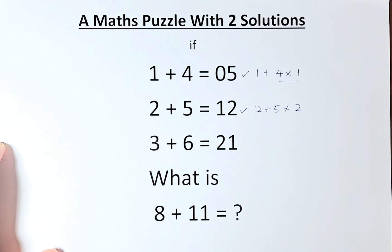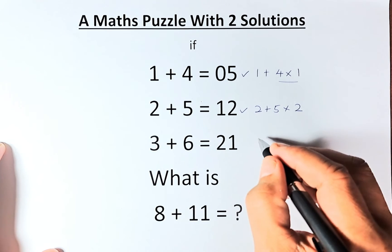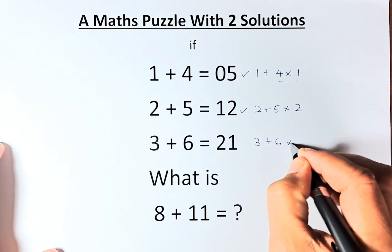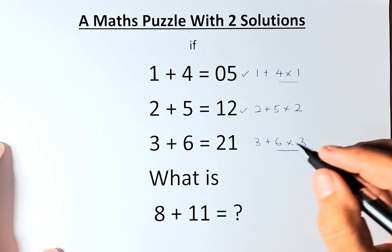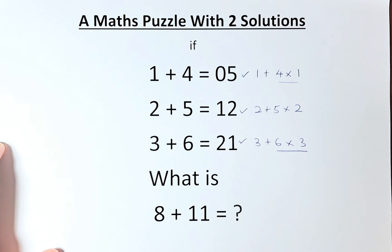And then the process continues. 3 plus 6 equals 21. So it's going to be 3 plus 6 times 3. So we're going to do this part first. 6 times 3 is 18, 18 plus 3 is 21.